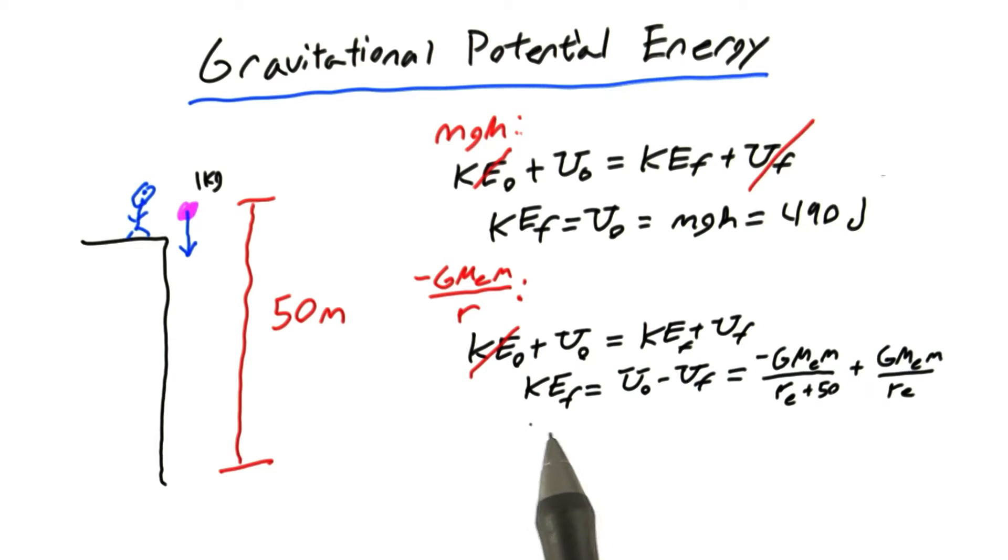Solving for final kinetic energy, we get that it's the difference between the original potential energy and the final potential energy. And we can plug in our formula for those to get this equation. Inserting our known values into this equation, we get that the final kinetic energy using this version of the gravitational potential energy is 486 joules.